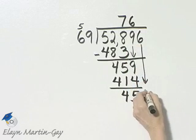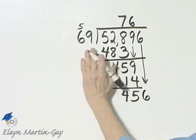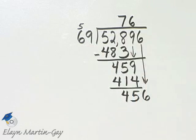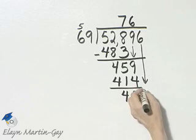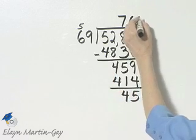And then let's bring down the 6. Now, by the way, notice my difference here was less than my divisor, so I was okay. I was okay and 6 actually was correct. Since I have 456, close to 459, let's try 6 again.